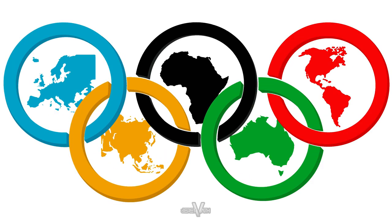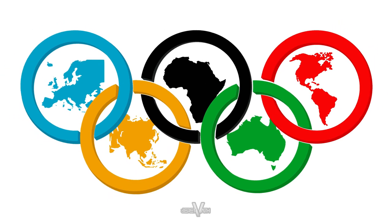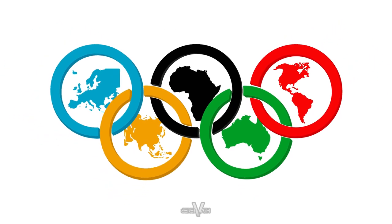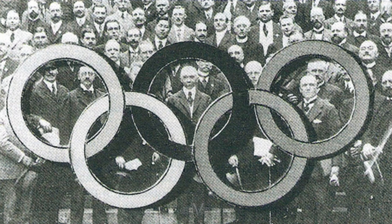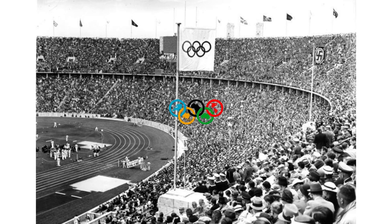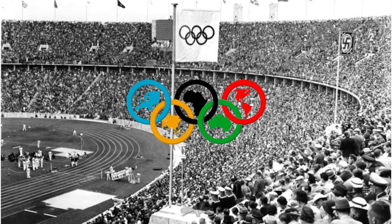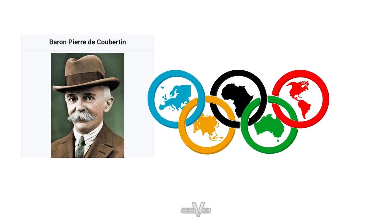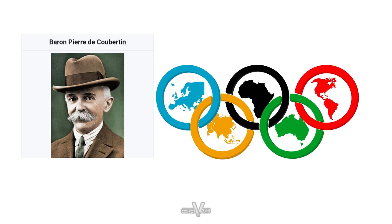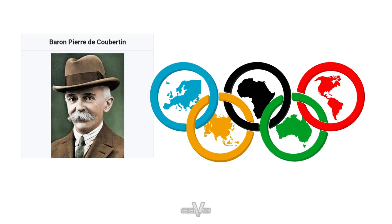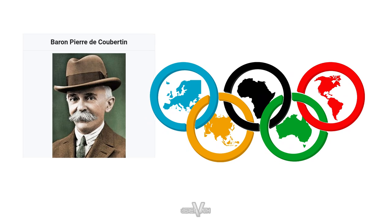The rings are five interlocking rings, colored blue, yellow, black, green, and red on a white field, known as the Olympic rings. The symbol was originally created in 1913 by Coubertin. He appears to have intended the rings to represent the five inhabited continents: Europe, Asia, Africa, Oceania, and the Americas.